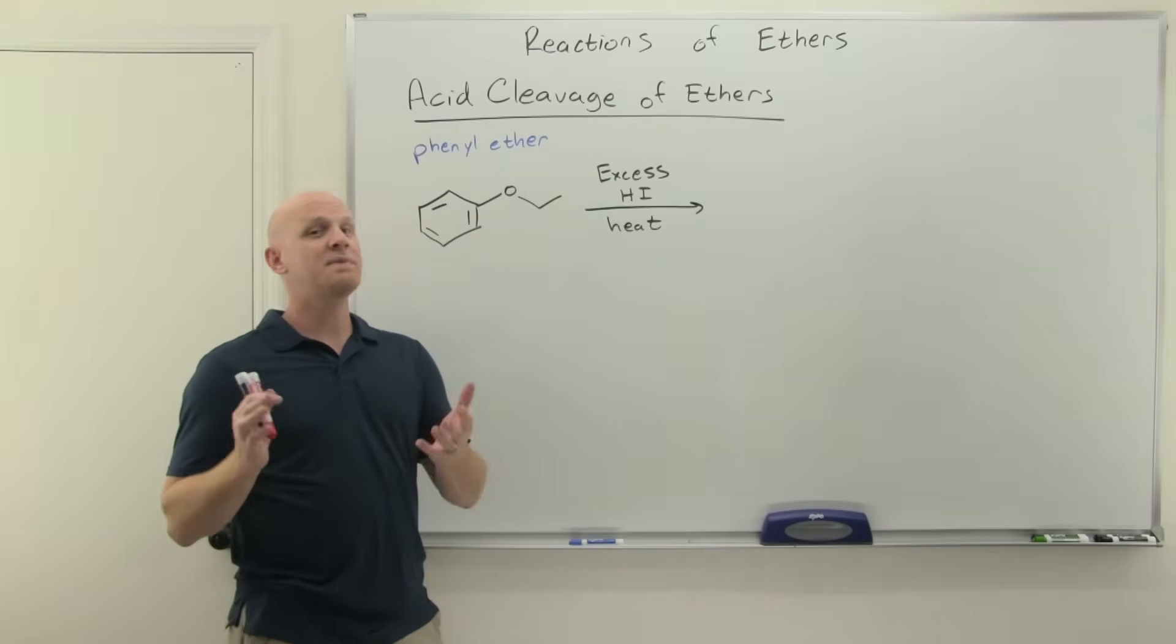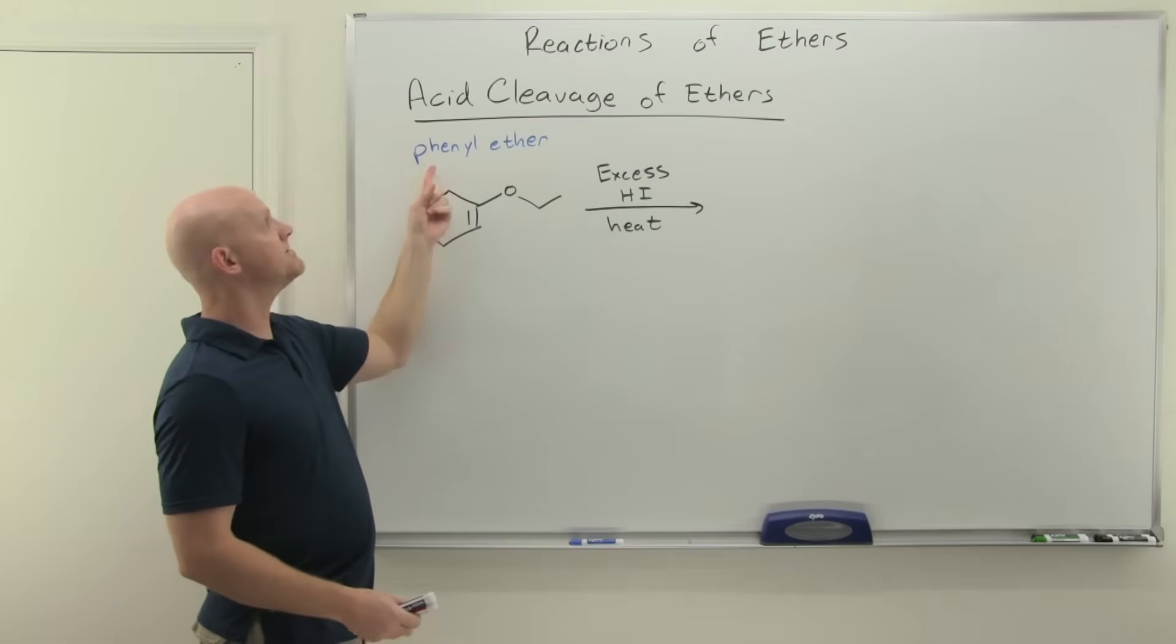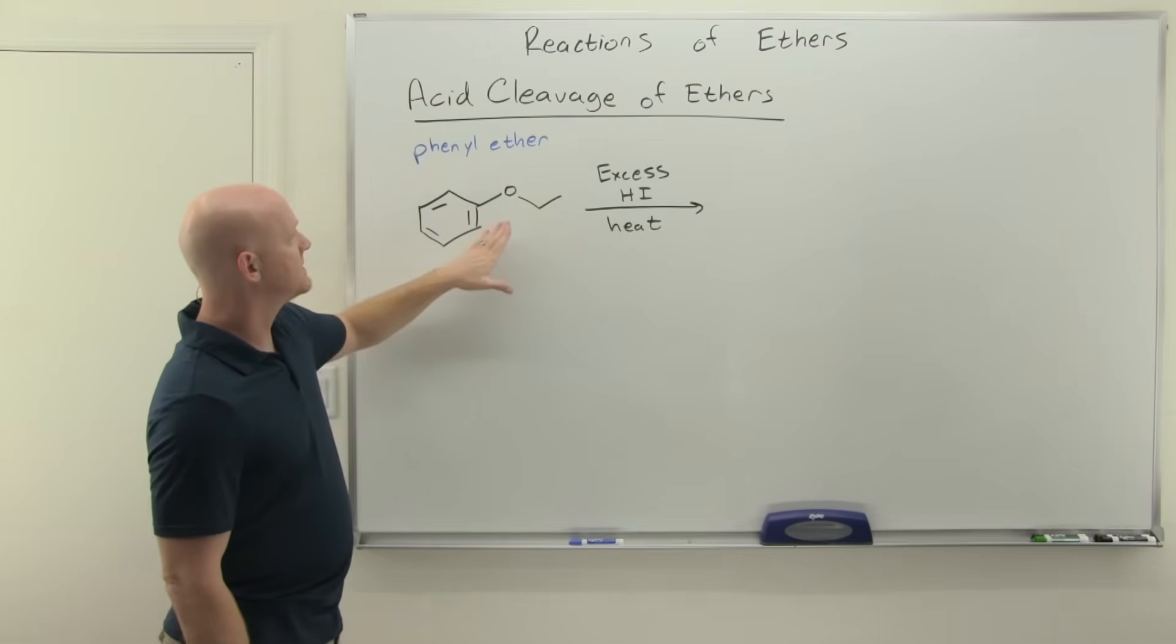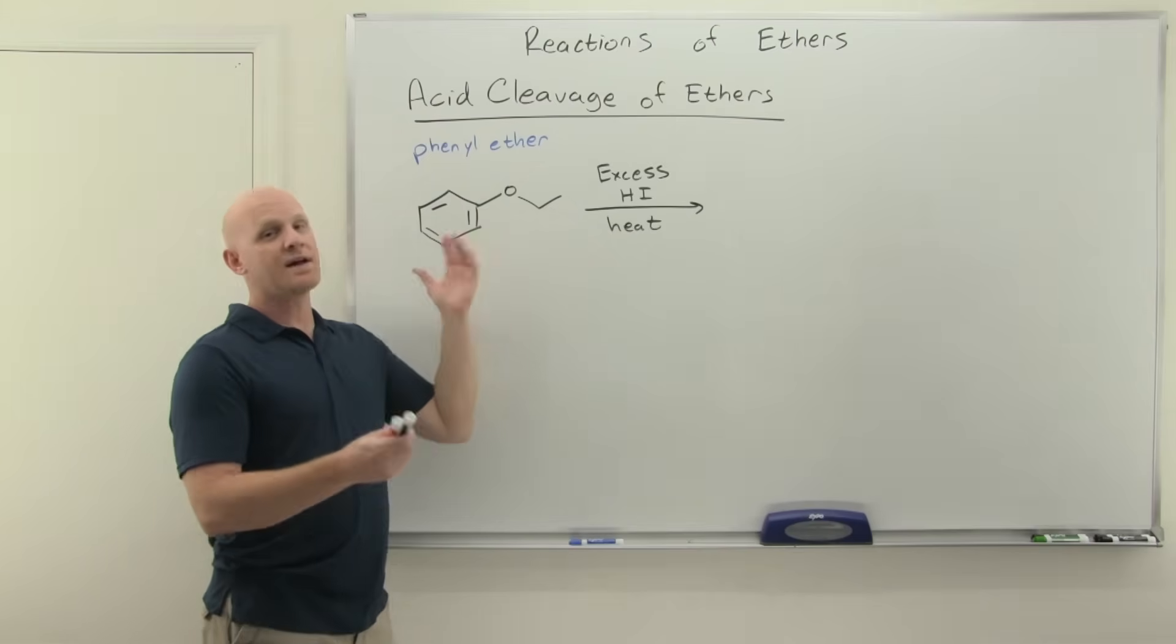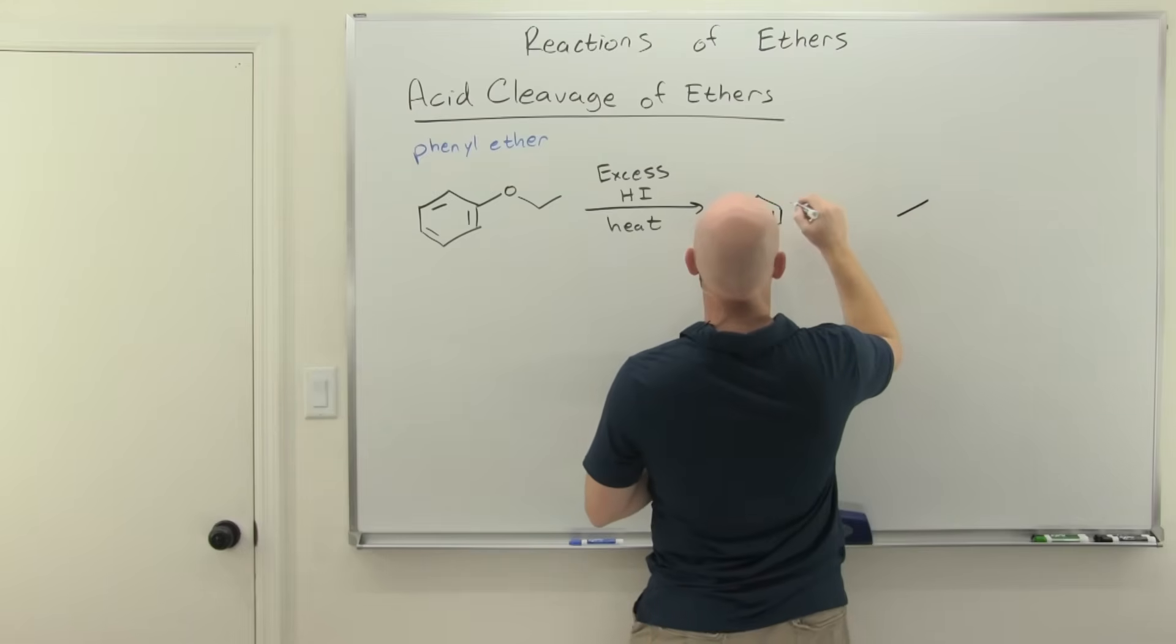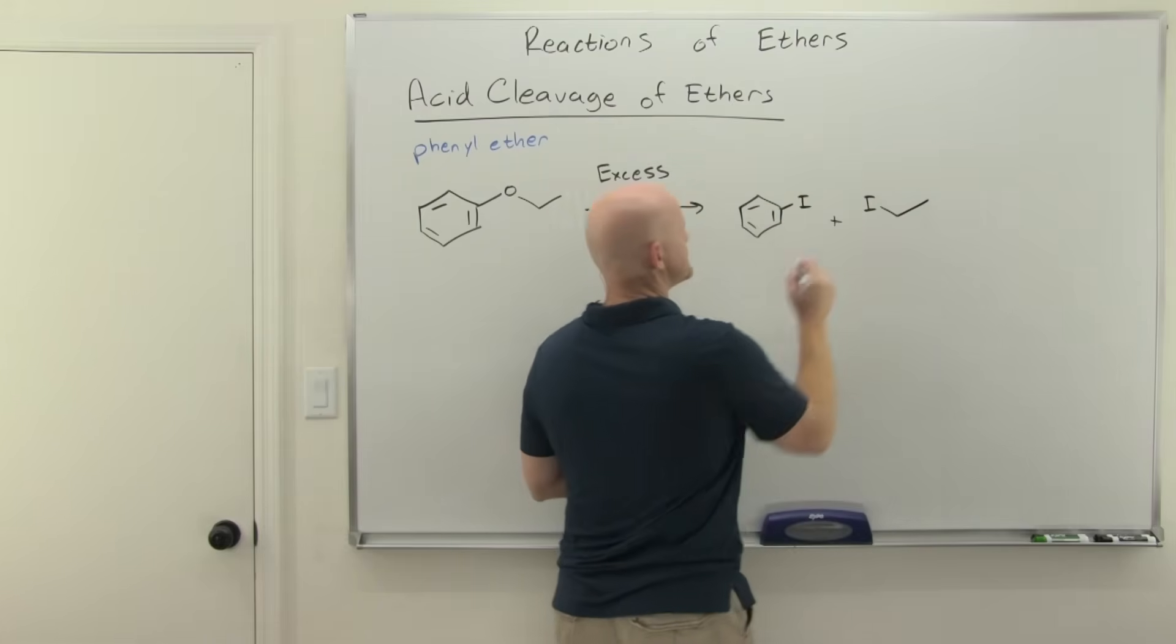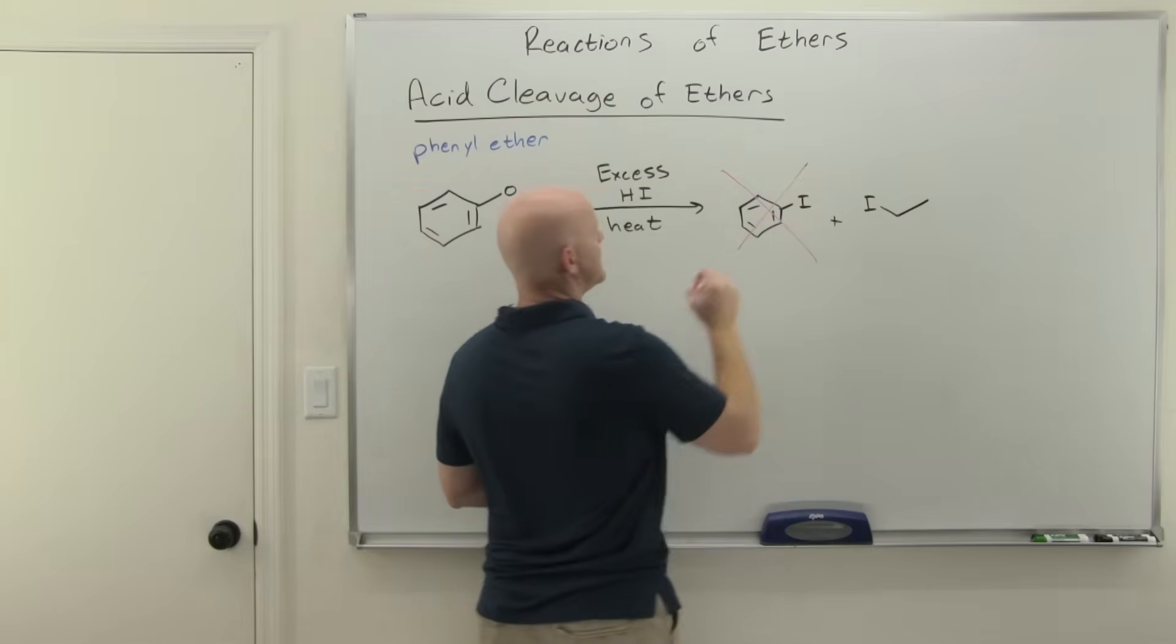Now we want to look at a special case. We've got what's called a phenyl ether, where on one side of the oxygen you have a benzene ring attached, a phenyl group. In this case, it turns out you can't break this carbon-oxygen bond. If we didn't realize this, we might predict products—you've got a benzene on one side and a two-carbon chain on the other. You'd think you'd add iodines to both and get two alkyl iodides. The problem is you're not going to get this one at all.